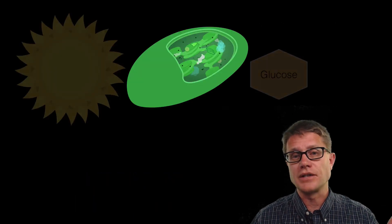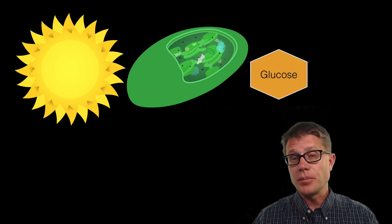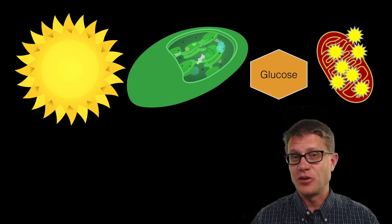So what does a chloroplast do? It takes energy from the sun to make high energy molecules that can be utilized to grow the plant or to generate ATP inside mitochondria. And I hope that was helpful.